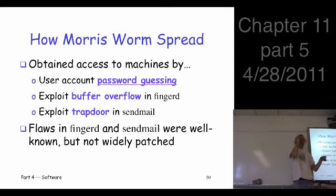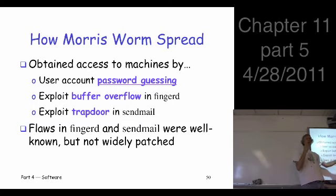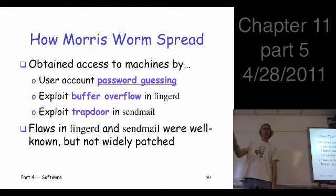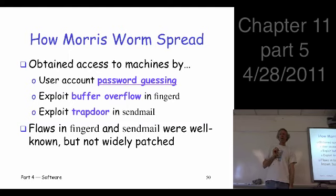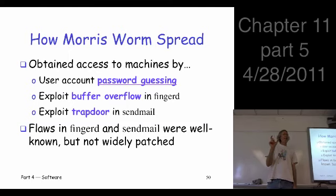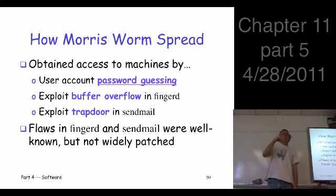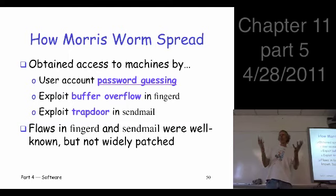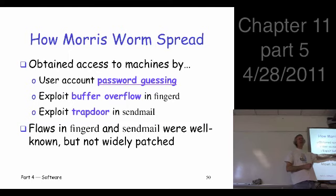So what does it do to find vulnerable machines? It tried password guessing — it had to get root access to these Unix machines. It had a built-in dictionary of some 300 common passwords. It also did some clever things: it looked at the file structure and based on the names in the file structure, it built a customized dictionary, so it had effectively a few more than 300. If that didn't work, it tried to exploit a buffer overflow — a well-known buffer overflow in a Unix utility at the time.